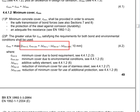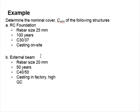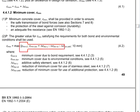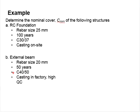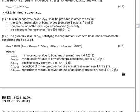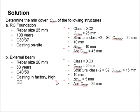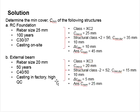Then you choose the biggest of the three numbers: 20 for the bar, 15 for durability, and 10. That means your C minimum will be equal to 20. And don't forget the deviations — since it is cast in the factory with high quality assurance, your deviations will be equal to 5 mm. So the nominal cover required will be 20 plus 5, equal to 25 mm.